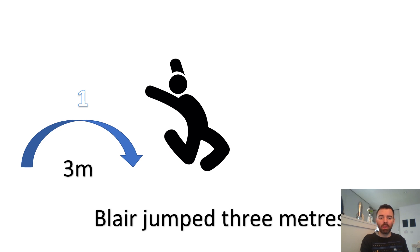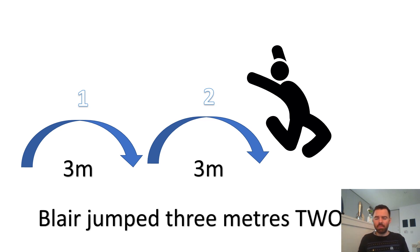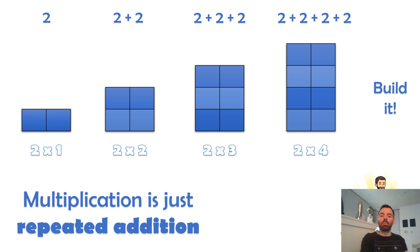I'm going to give you a wee example. Here we've got Blair jumped three meters. I've jumped three meters. Now Blair jumped three meters two times — so I've jumped three meters, and then another three meters. What I've done is I've multiplied my jump by two. I've timesed it by two. So I jumped three meters, then I jumped another three meters. How many meters did I jump altogether? Six. Multiply is when we make a duplicate of something. Another way to think of it is repeated addition.